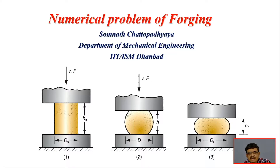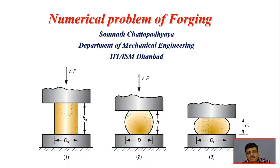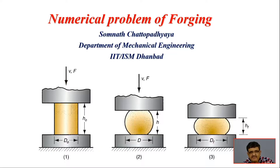The force causes the dimensions of the product to permanently change — the material is plastically deformed — and finally we reach a state where the height becomes H suffix F (final height) and the diameter becomes D suffix F.